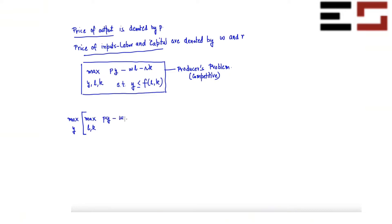The full problem is: maximize p·y − w·L − r·K subject to y ≤ f(L,K). You solve it in two steps. First solve the inner problem — the one in brackets — taking y as given and choosing L and K. For every y you get a certain level of profit. Then you choose the y that yields the maximum profit.